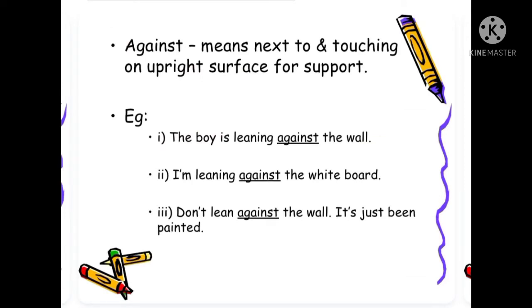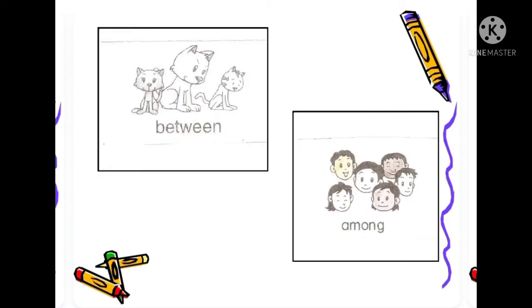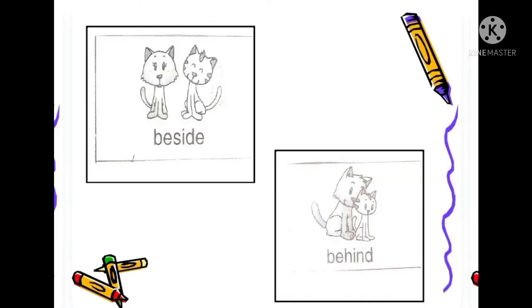Against means next to, touching an upright surface for support. Example: the boy is leaning against the wall. I am leaning against the whiteboard. Don't lean against the wall, it's just been painted. Another example: between, among, beside, behind.